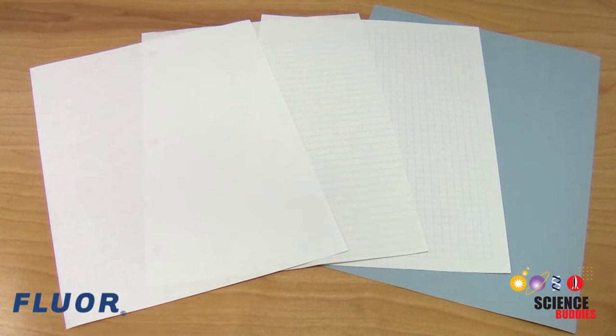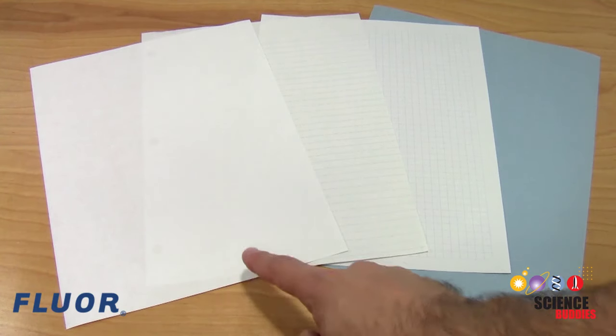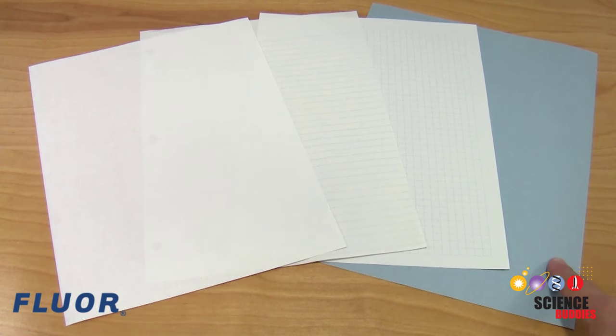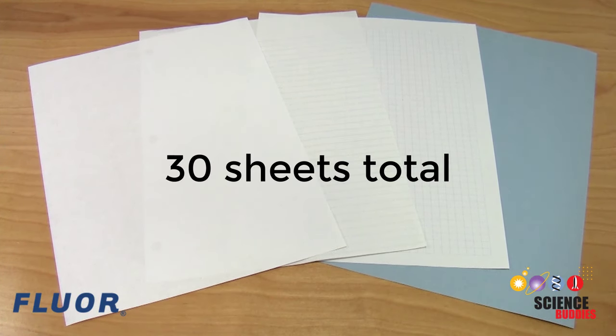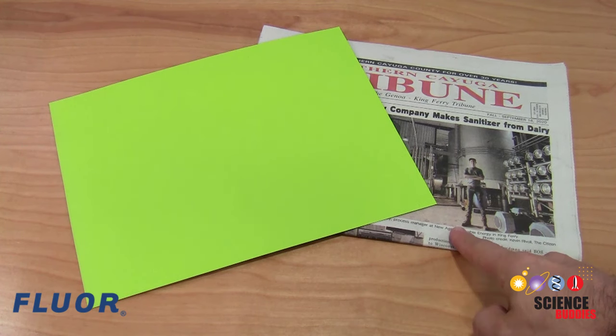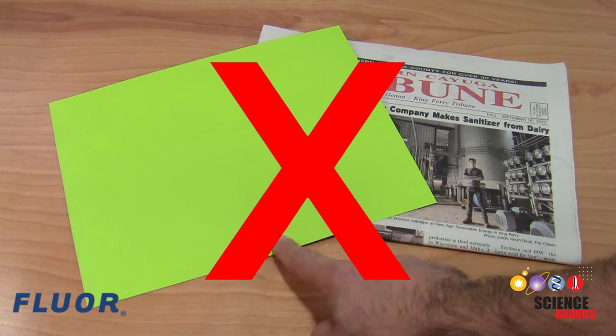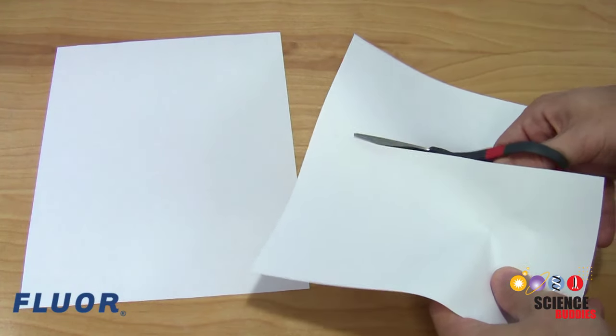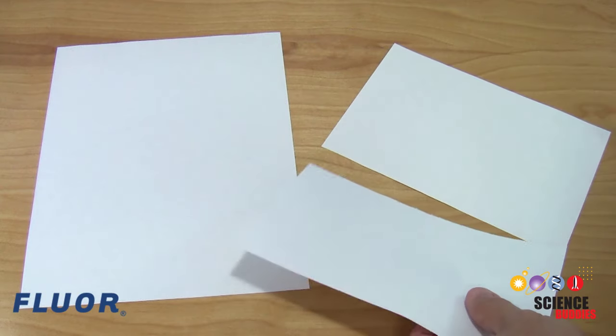You can only use paper and tape to build your tower. Printer, notebook, graph, and similarly sized construction paper are all allowed up to 30 sheets total. Due to their different size and strength, newspaper and cardstock are not allowed. Note that the amount of paper is not prorated. If you only use part of a sheet, it still counts as a whole sheet.